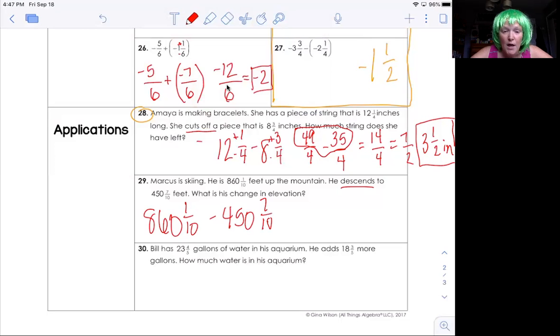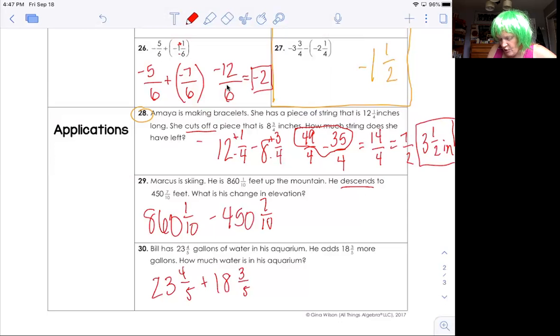Let's look at the last one. Just set it up. Bill has 23 and four fifths gallons of water in his aquarium. He adds 18 and three fifths more gallons. He adds it. So plus sign. So this is what the problem would look like. 23 and four fifths plus 18 and three fifths. And then my answer would be gallons. And then my answer for number 29 would have been feet.